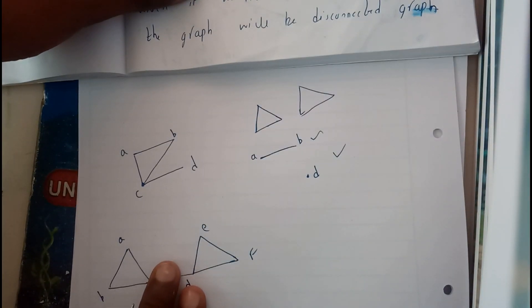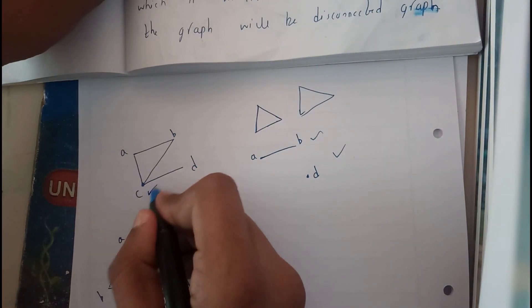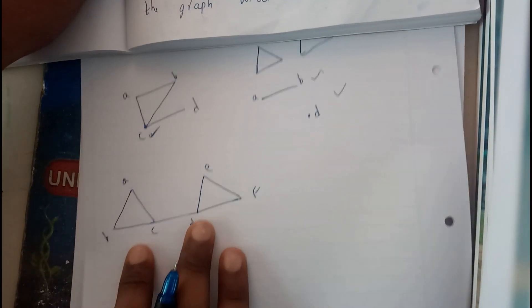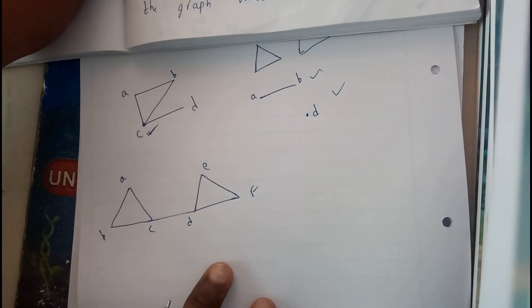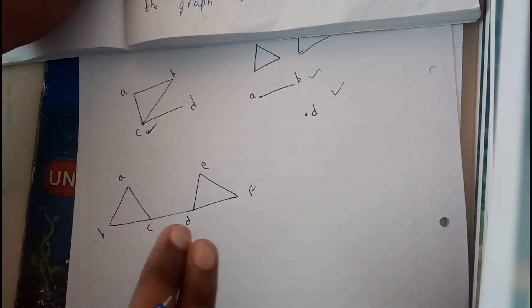So thereby c is a cut vertex in this graph. Let us take the next example. I just made it a bit complex, but it seems to be really an easy one.